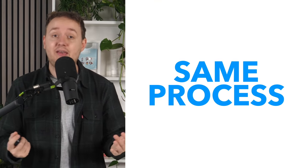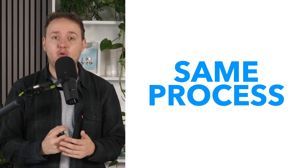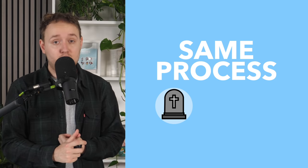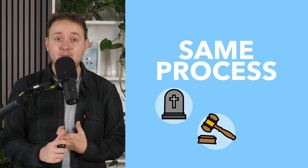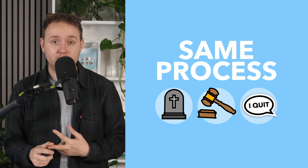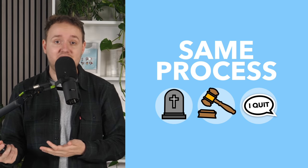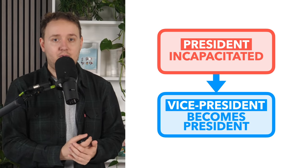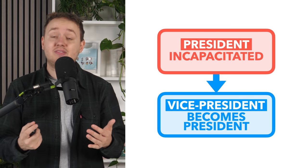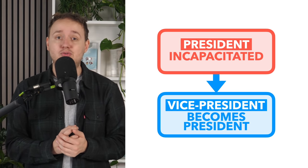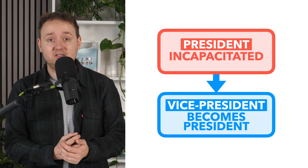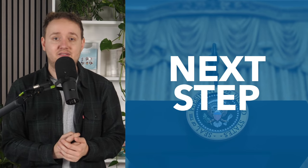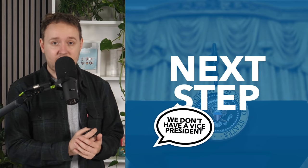The same thing happens following the death of the president due to natural causes, impeachment, and resignation. The vice president takes the oath of office and becomes the president. Once the VP takes the role of president, they must then fill the vacancy for vice president.